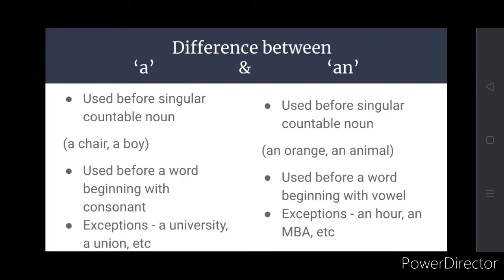A is used before singular countable noun like a chair, a boy. Whereas an is used before singular countable noun, an orange, an apple.